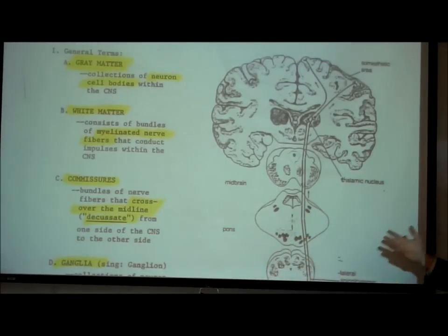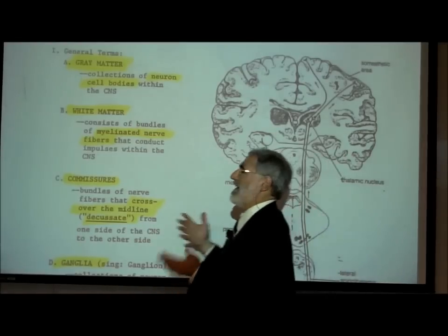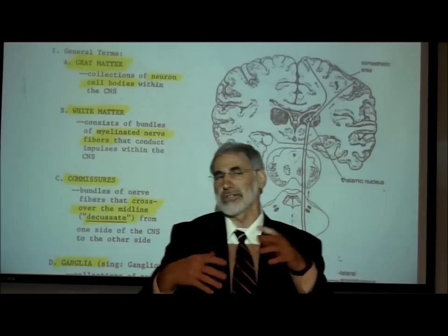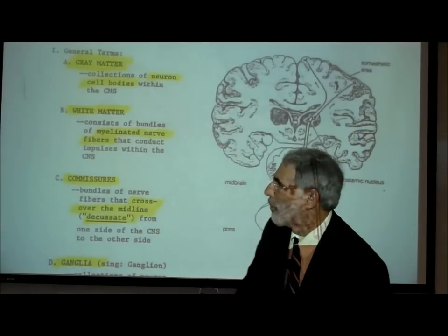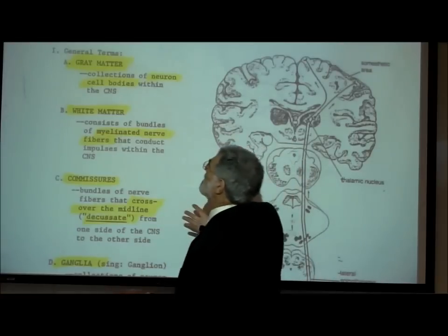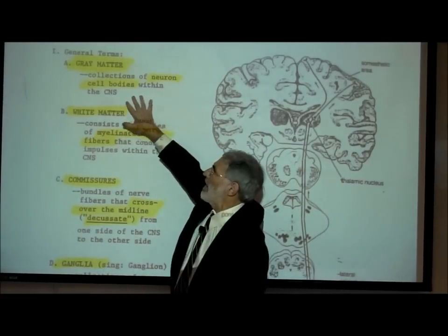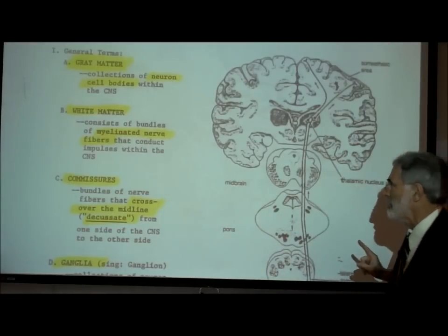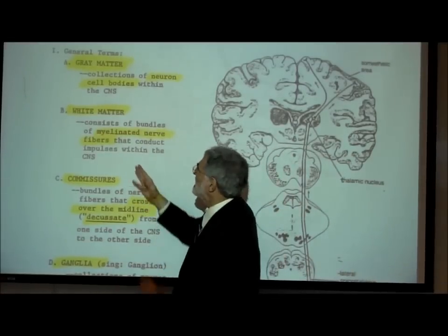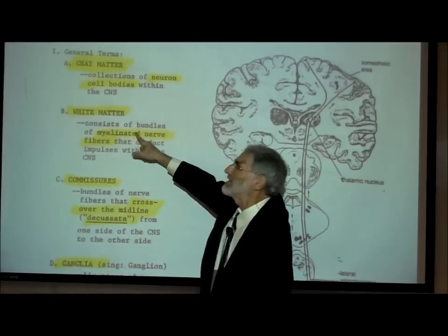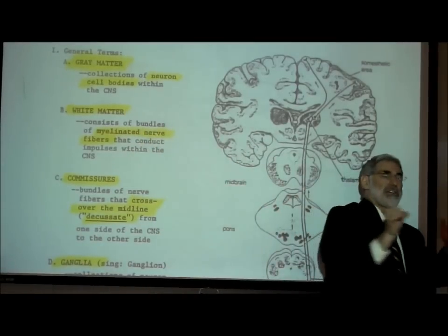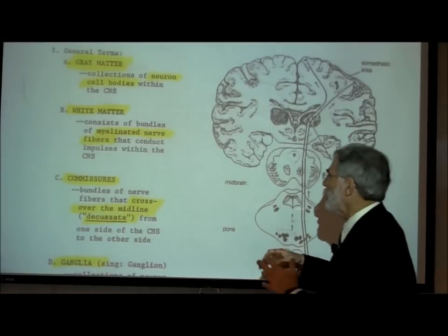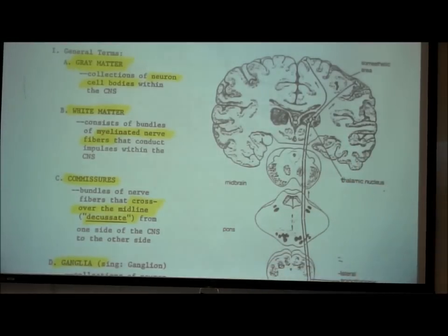You may have heard the terms gray matter and white matter. When we look at the brain or the spinal cord, some areas look gray and some areas look white. What is the gray matter? That's where we have neuron cell bodies located. Where it looks white is where there are myelinated nerve fibers — wherever there are a lot of myelinated nerve fibers, that area looks whitish.